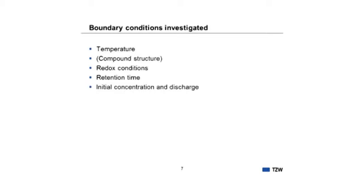Now some words about the removal of trace pollutants and DOC. We investigated several boundary conditions and their effect on removal: temperature, compound structure — which is not strictly a boundary condition but is important — redox conditions, retention time, initial concentration in the surface water, and the discharge of the rivers. Removal is defined as the difference between the concentration in the surface water that we infiltrate and the water we extract afterwards after subsurface treatment.